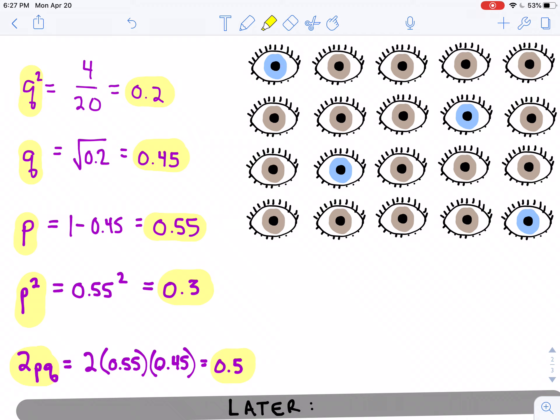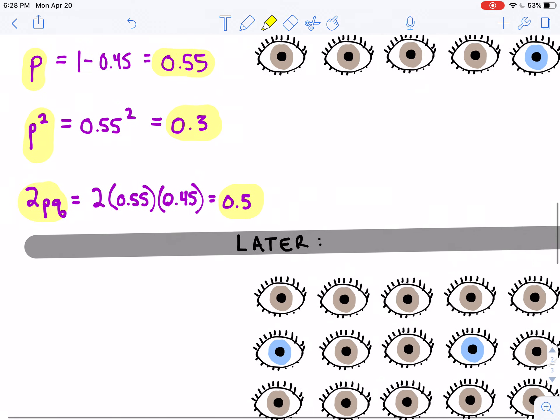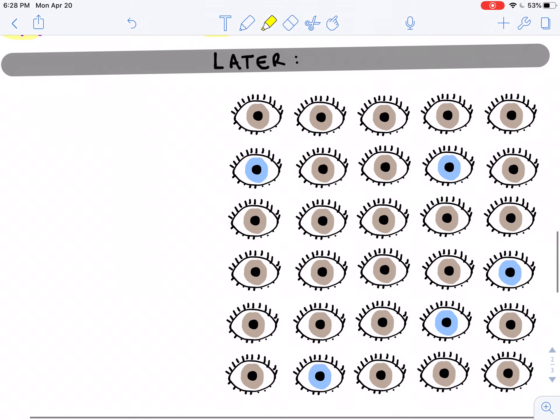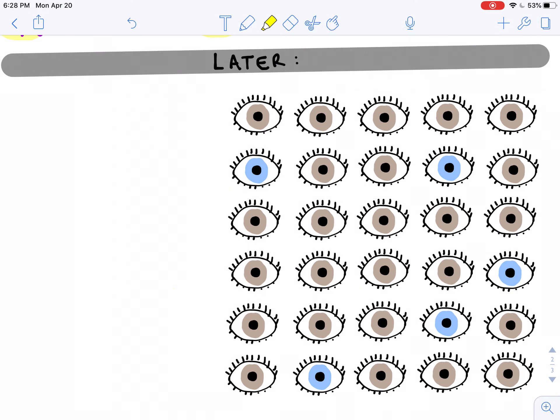And that is our entire set of calculations. So we now have p and q, the frequency of the dominant allele and recessive allele. We have p squared, 2pq, and q squared, which is the homozygous dominant, heterozygous, and homozygous recessive genotypes, respectively. So there is our mathematical snapshot of this original population. But what if we scooch ahead and look at the same population later on?